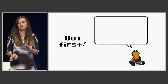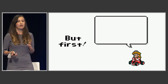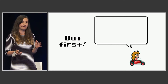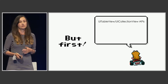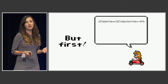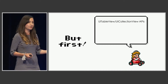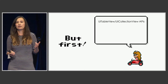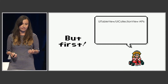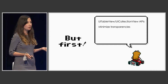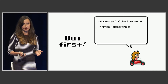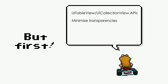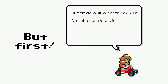Before you do any sort of CPU or GPU optimizations, there are some things you should do that will probably take care of the vast majority of your scrolling issues. UITableView and UICollectionView have really powerful APIs that are enriched every single year. First, you should be using methods like estimated row height and will display cell. Second, you should be minimizing transparencies — use the built-in debug tools in the simulator to figure out where views are transparent when they don't need to be, and color them solid, because that will save you processing time for blending.